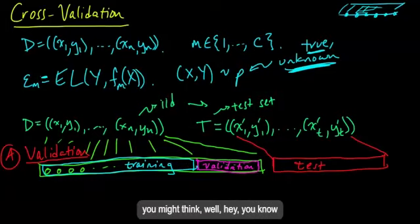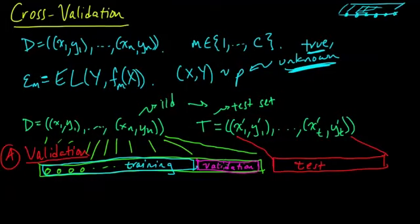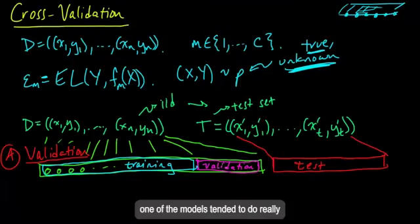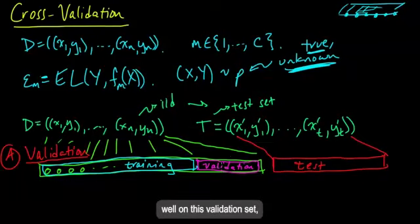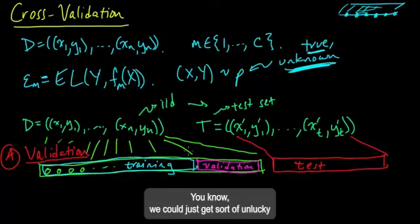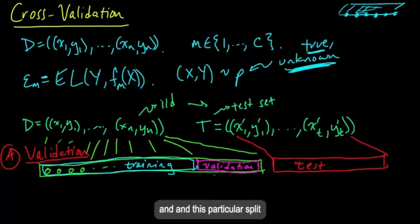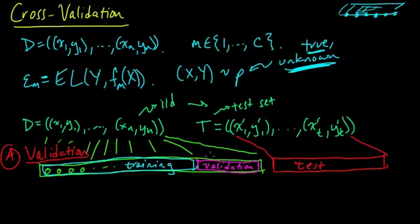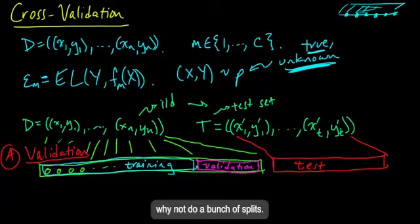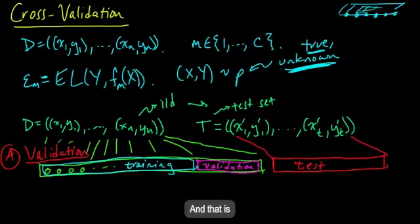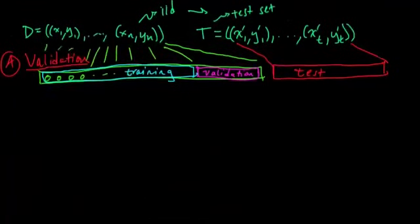But you might think, well, hey, what if just by chance, one of the models tended to do really well on this validation set? But it wasn't really a good model in general. We could just get sort of unlucky, and this particular split might not be representative. And so, why not do a bunch of splits?